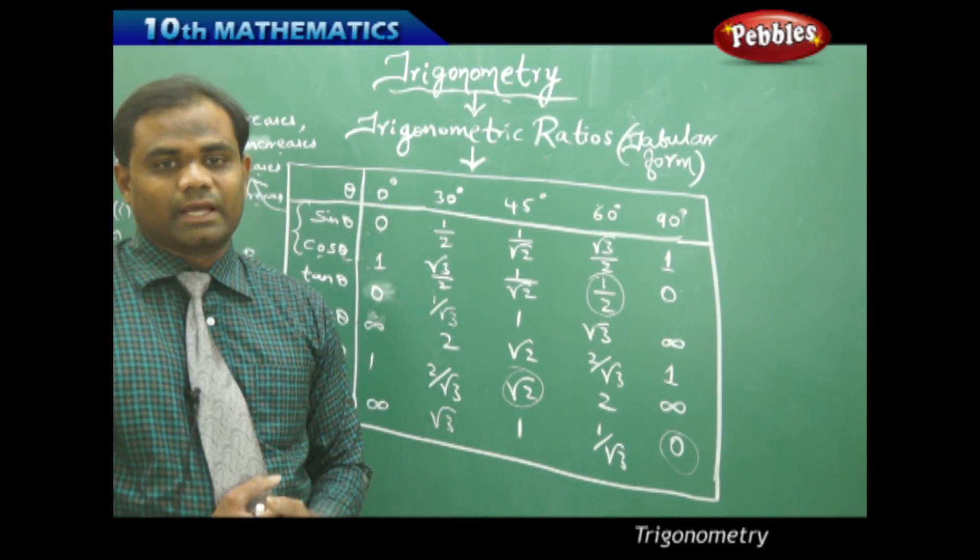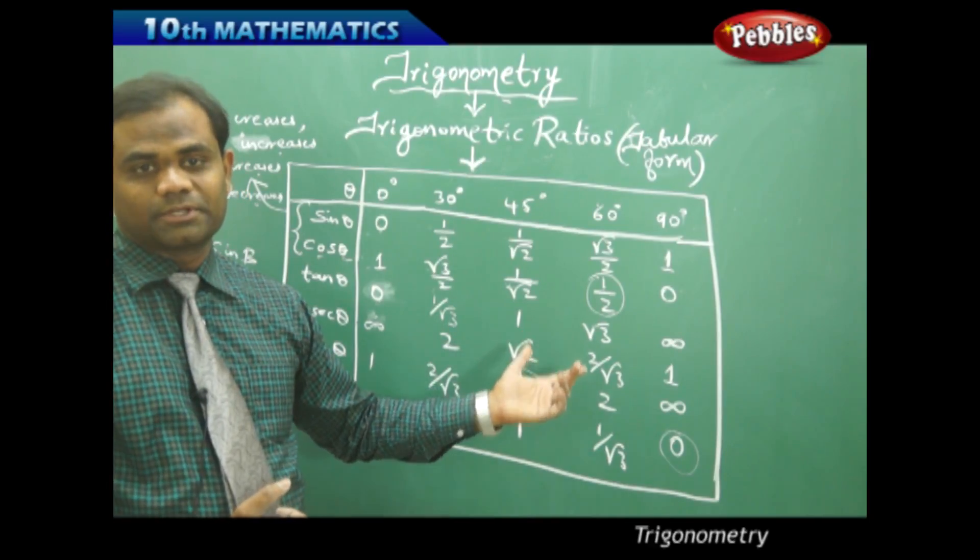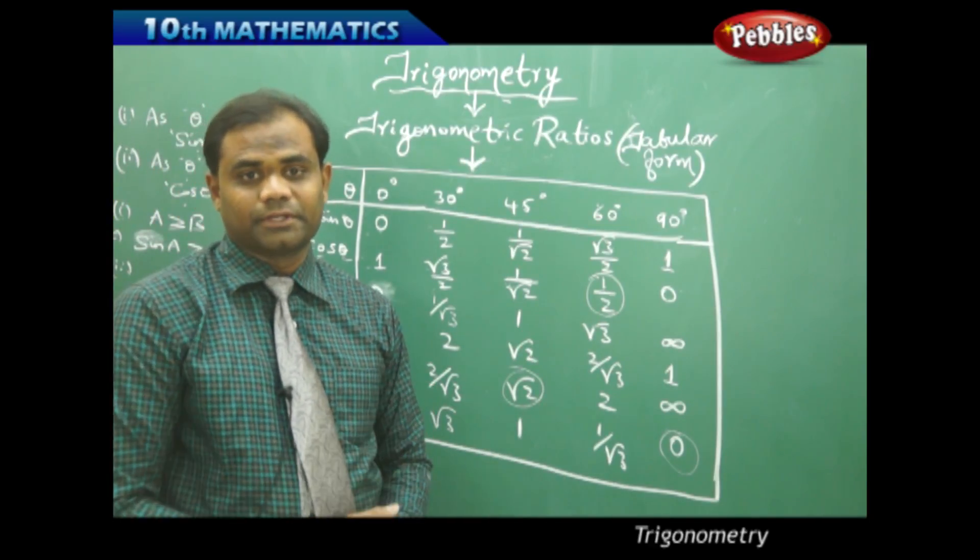This is how we identify through the tabular column of special angles connected with trigonometric ratios.